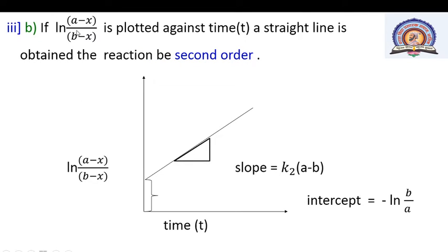For the second order unequal concentration case, plot ln[(a−x)/(b−x)] versus time t. If a straight line is obtained, the slope equals k₂·(a−b) and the y-intercept equals ln(b/a). Here a and b are the initial concentrations in second order reactions with unequal initial concentrations.